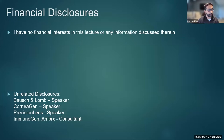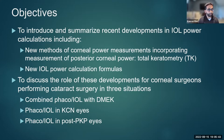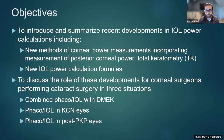I have some unrelated financial disclosures. Today we're going to introduce and summarize recent developments in IOL power calculations, including new methods of measuring corneal power, specifically total keratometry — the TK value introduced on the IOL Master 700 in late 2019. We'll also talk about new IOL power calculation formulas; there's been a plethora released in the past several years, and navigating through them can be overwhelming. We'll also discuss the role of these developments for corneal surgeons in three specific situations: combined phaco with DMEK, phaco in patients with stable keratoconus, and patients after PKP who require cataract surgery.